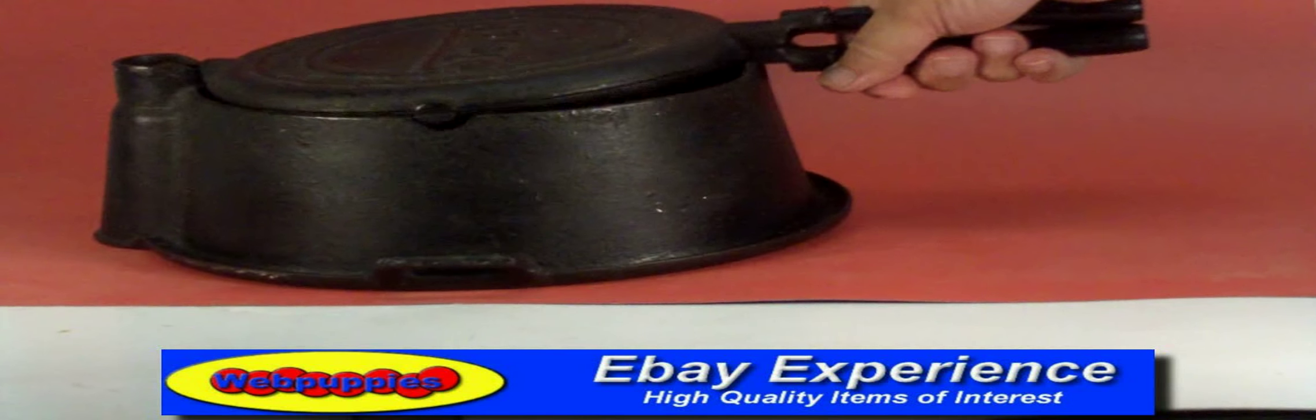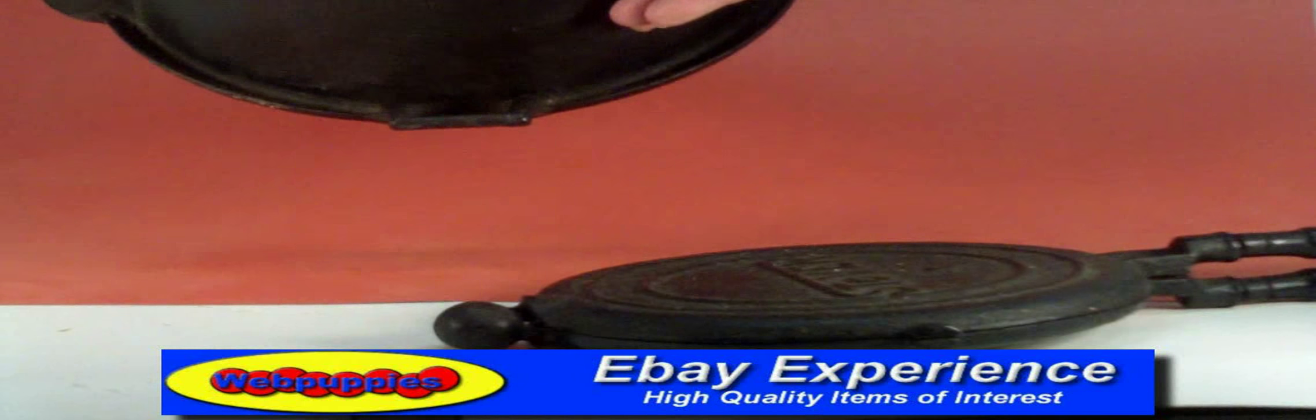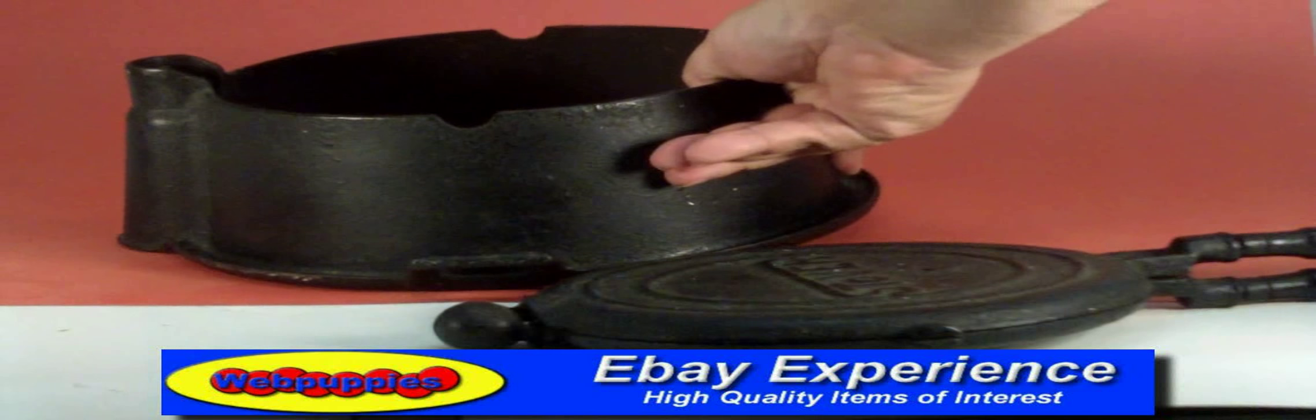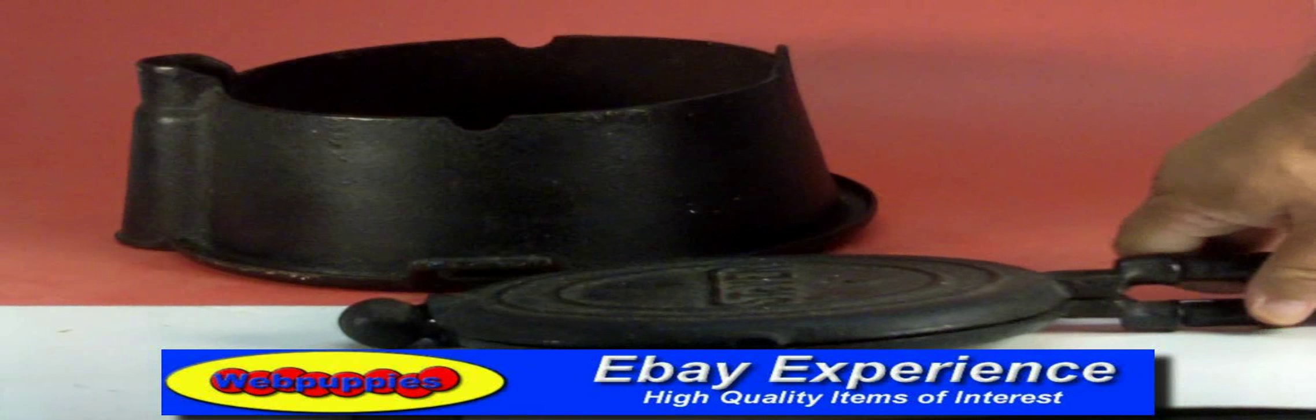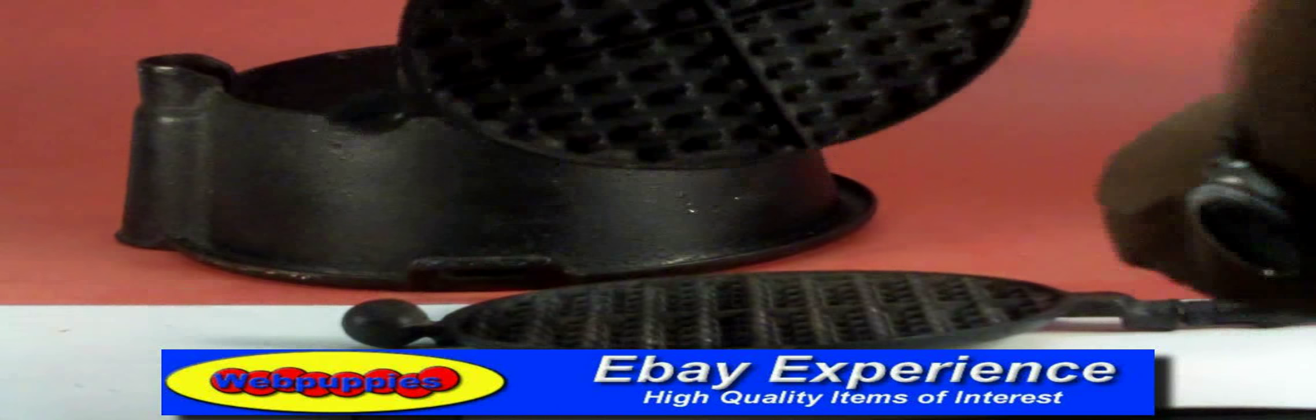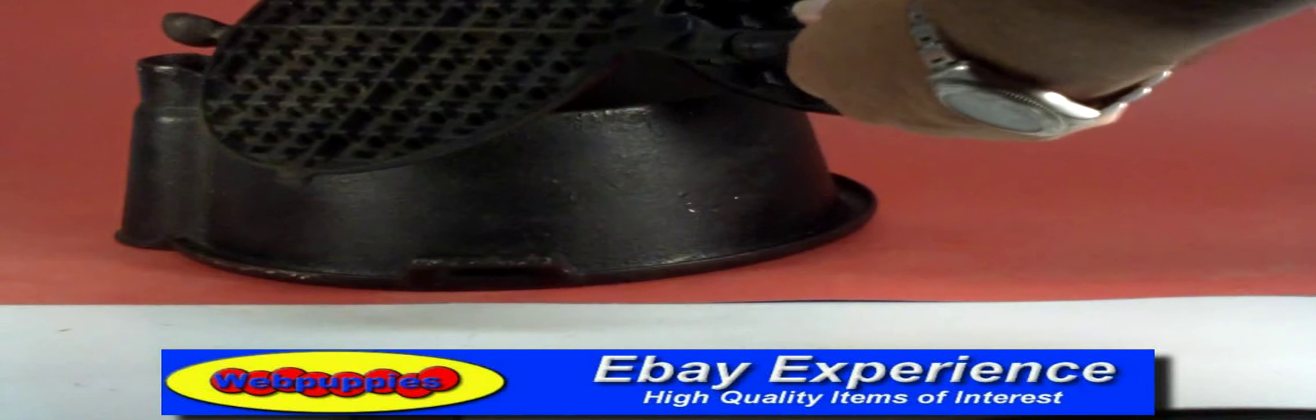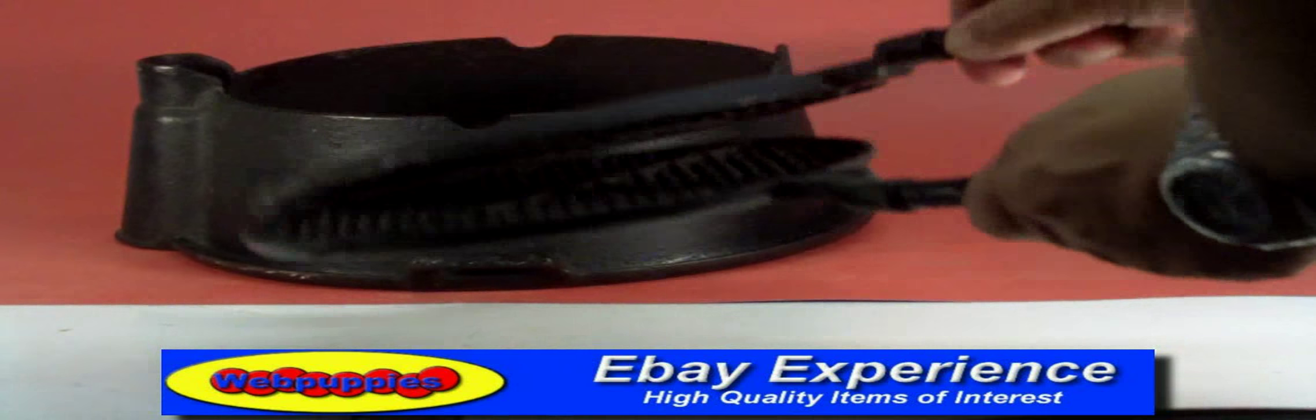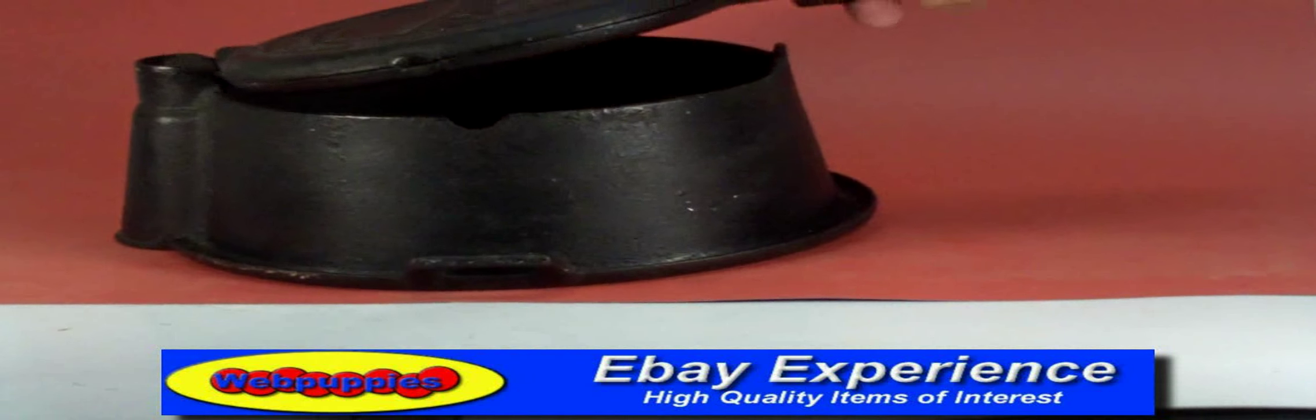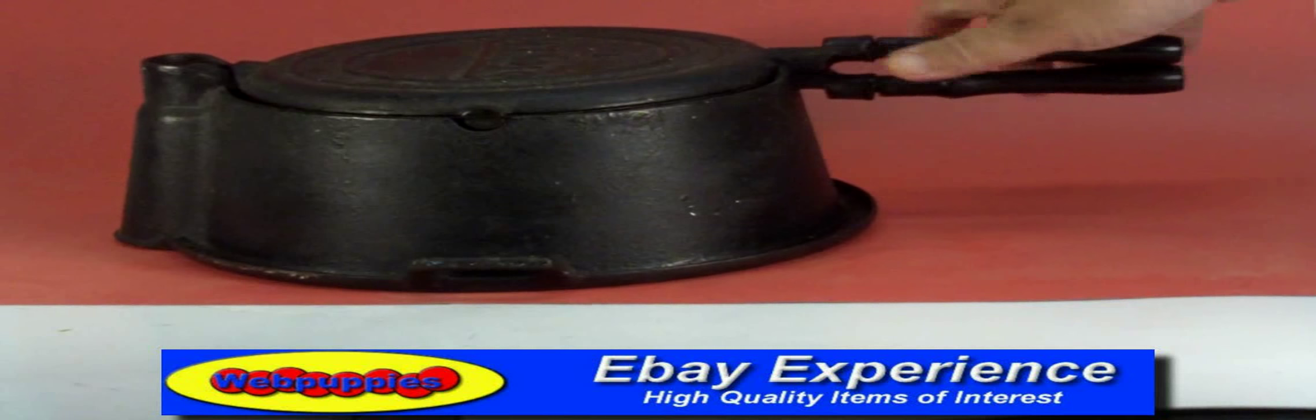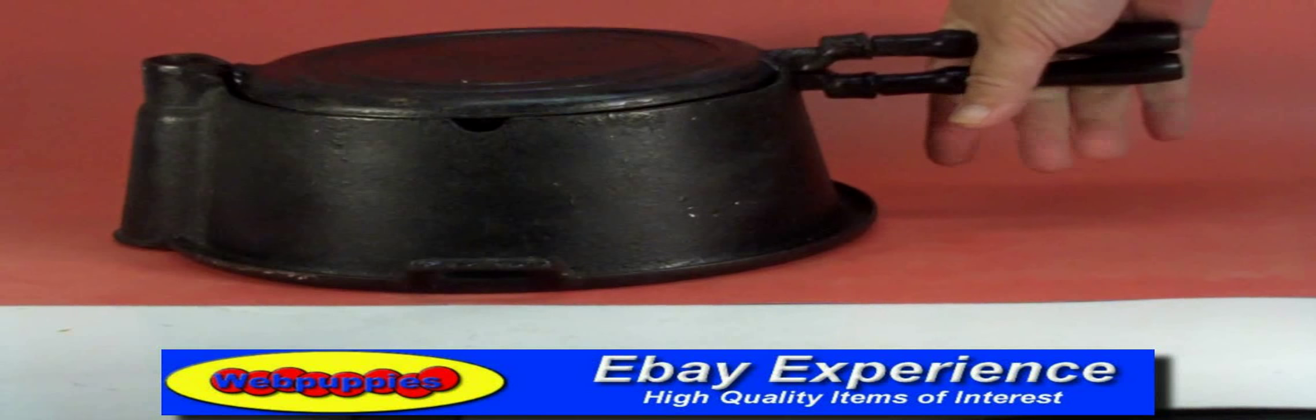The waffle iron actually will lift out of the base unit. The base unit is hollow and sits on top of the stove or the campfire or the grill. The two waffle irons are in excellent shape, not a bit of rust on them at all. Very clean. This will then fit into the base and then you cook it on one side and then basically just flip it over to the other.